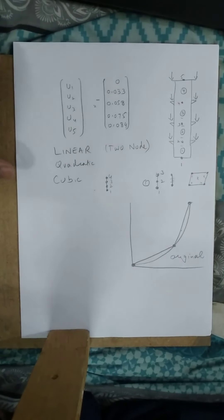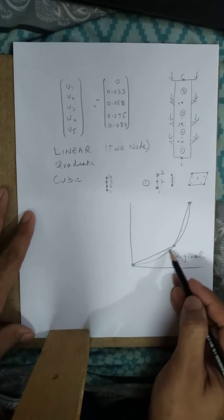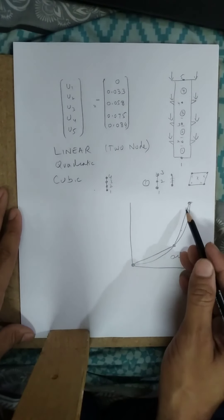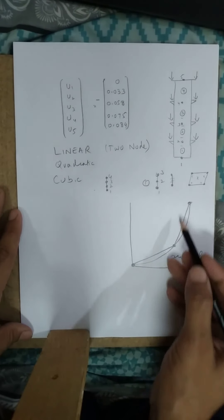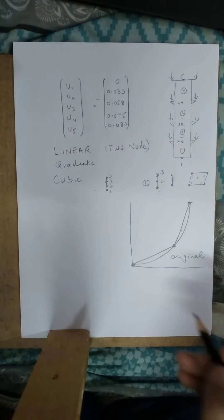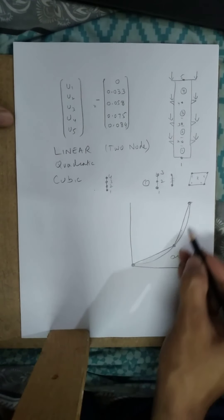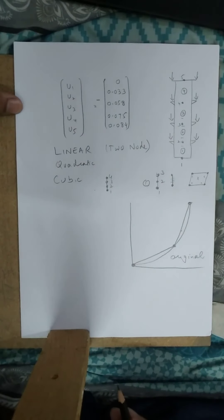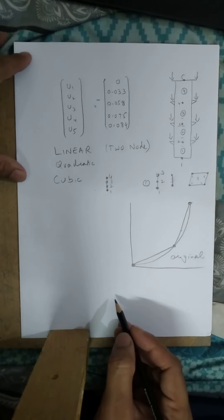Now you can clearly see how this proposed finite element solution deviates from the original solution. There are two ways to reduce this deviation and bring our approximation closer to the original value.